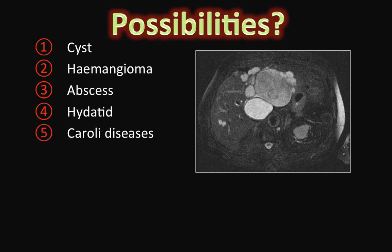Caroli's disease is a type of choledochal cysts with intrahepatic dilatations of the biliary radicals. These biliary radicals may show communication with the biliary tree and may show a central enhancing portal triad known as a central dot sign. Cystic degeneration in a hepatocellular carcinoma is also known; however, in most cases the patients would have underlying chronic liver disease or cirrhosis and the lesion itself would show soft tissue components that are hypervascular.